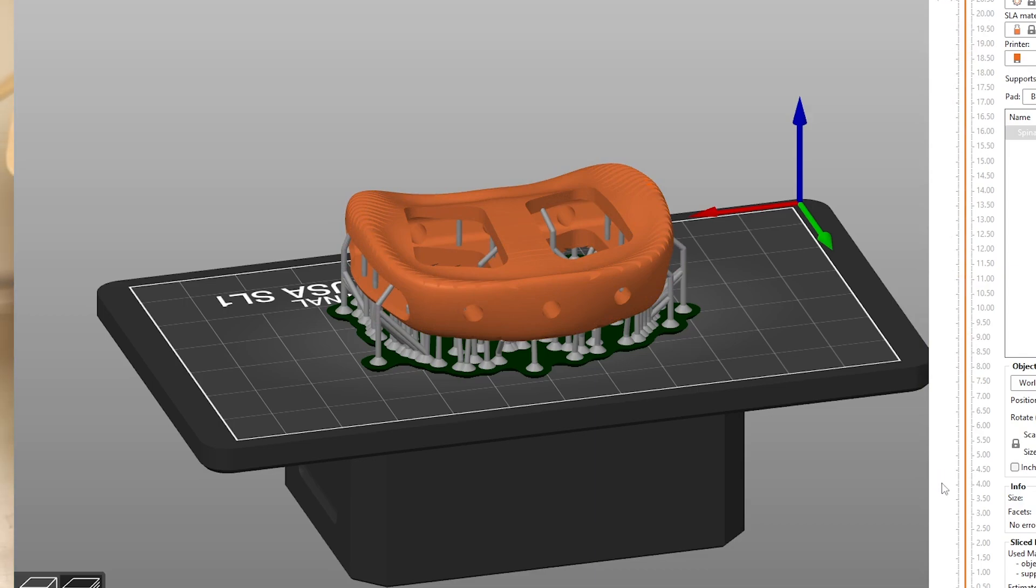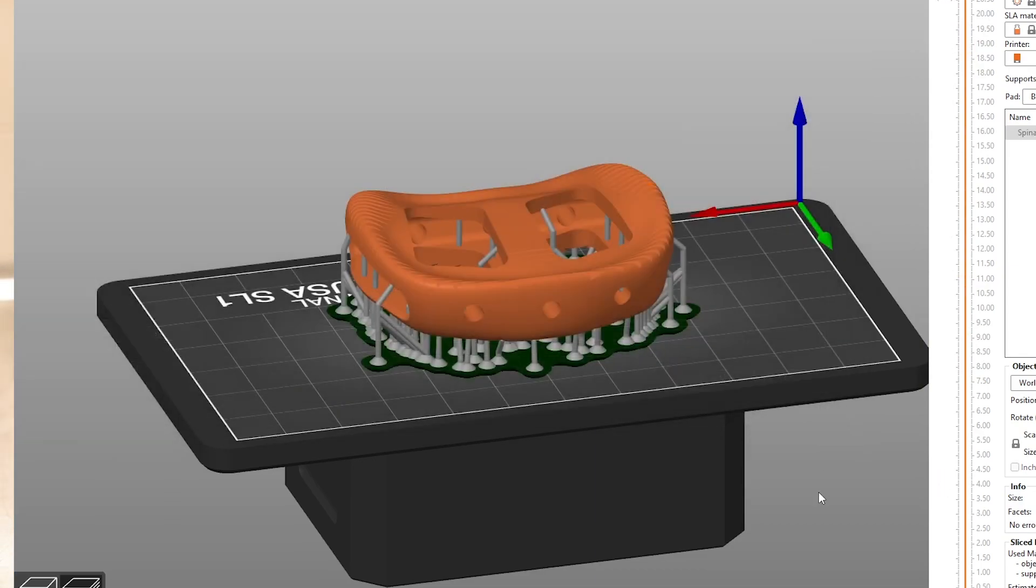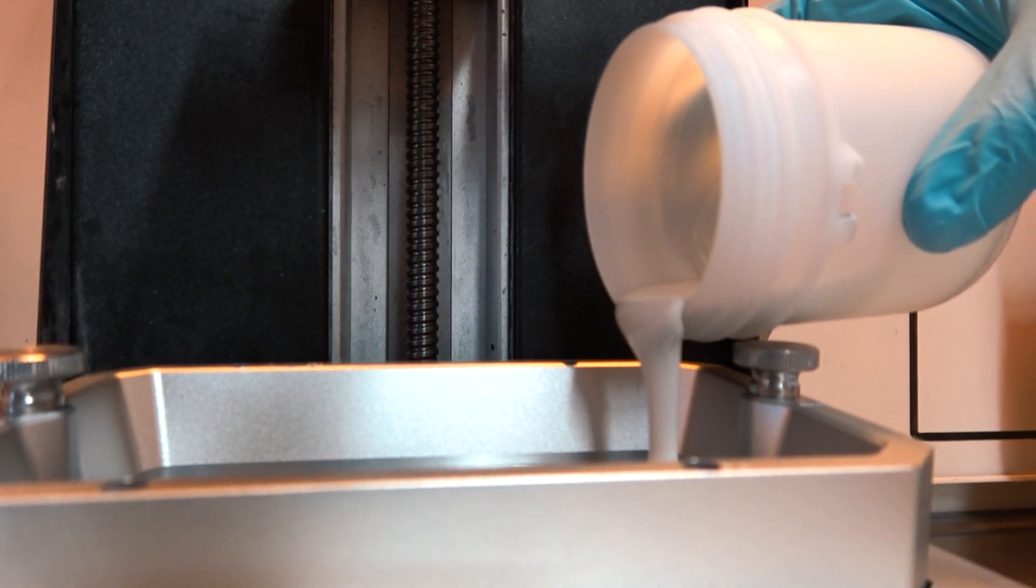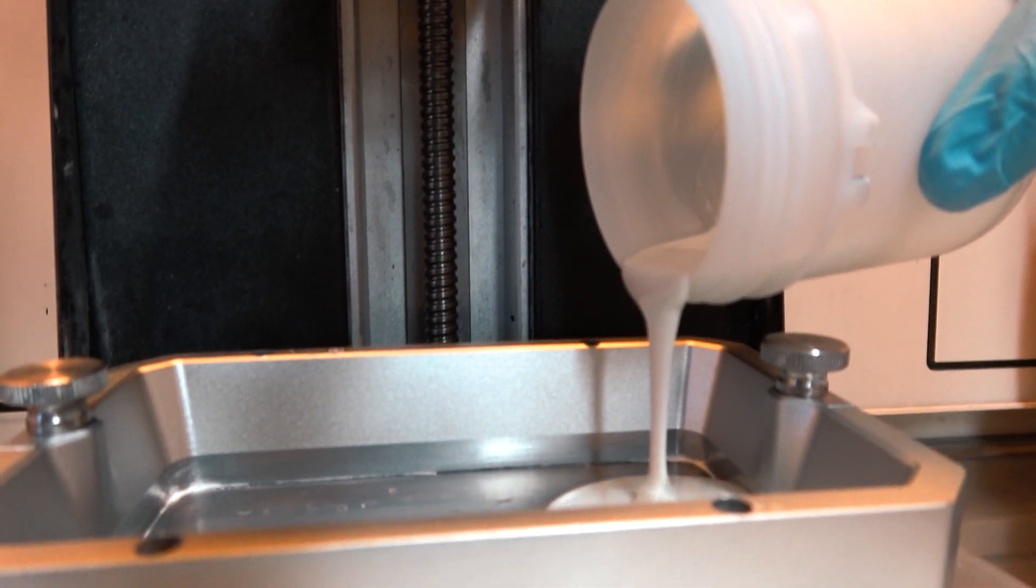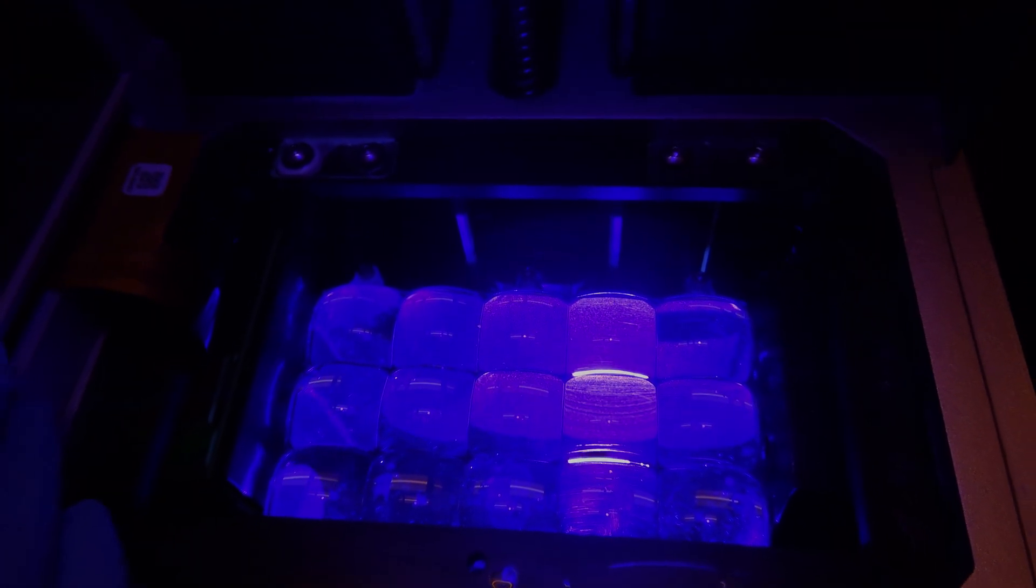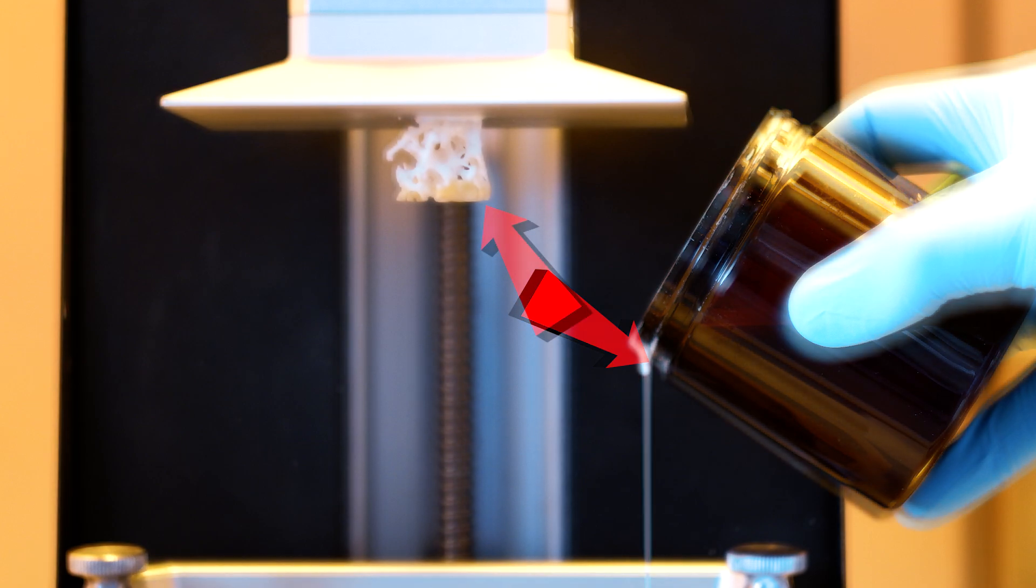Once the model is ready, we can head to the printer. A liquid photopolymer resin, which is filled with ceramic particles, is poured into the vat. This resin is sensitive to blue and UV light. And the moment it's exposed to the light, it turns from a liquid to a solid.